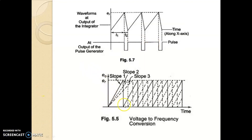As we increase the input voltage, the slope of the ramp also increases faster. That means the ramp voltage quickly reaches the reference voltage, so pulses are also generated more rapidly. And if the input voltage is low, then the ramp takes more time to reach the reference voltage and pulses are generated more slowly. So we can say that the frequency of pulse generation is proportional to the input voltage.